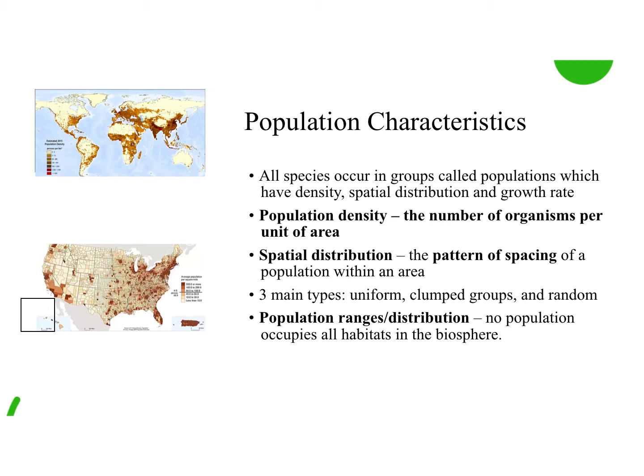Areas where you have more organisms in a population have a higher density; areas where you have fewer organisms have lower density. If you think about us compared to the United States, do we live in a densely populated area or low density? Good — we're low density. If you think of somewhere like a city, they have really high density — there are a lot of people in a given area.